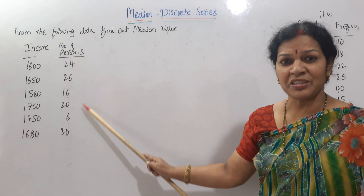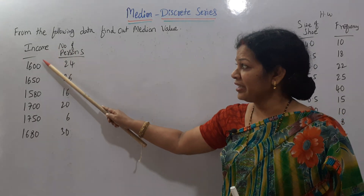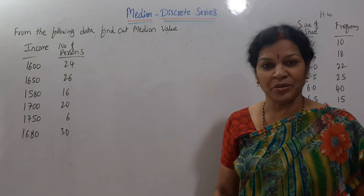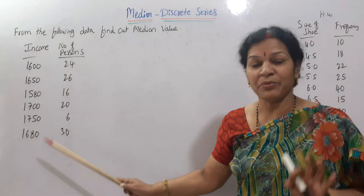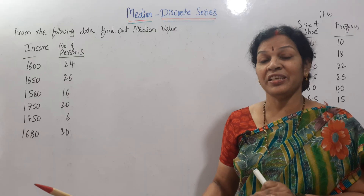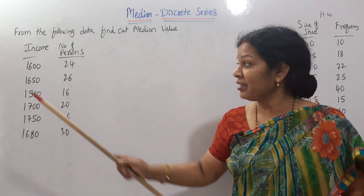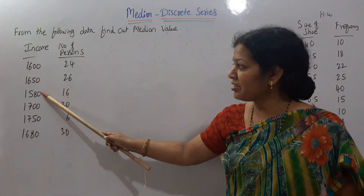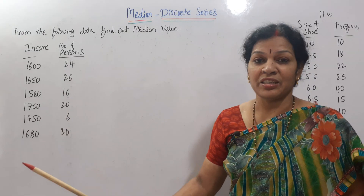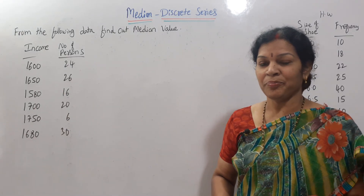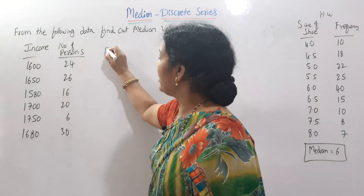See the problem: from the following data, find out the median value. What is given to us? Income and number of persons. Number of persons means this is the frequency; income is X. If you see the income, it is not in ascending order — we always have to rearrange it. You can see 1580 is the minimum, but the data shows 1600, 1650, 1580 and so on — it is not in ascending order, so we have to rearrange it.